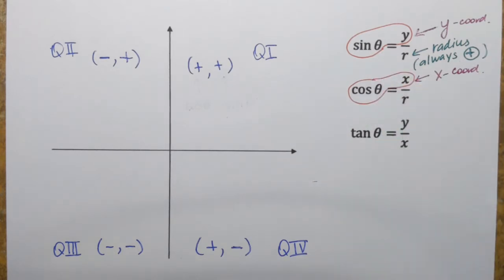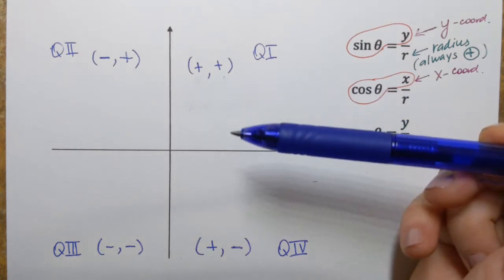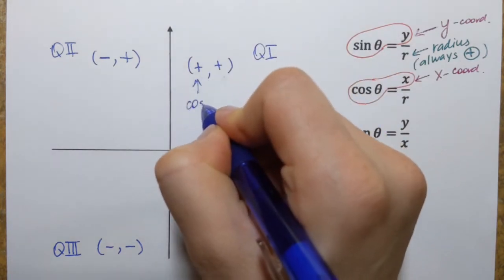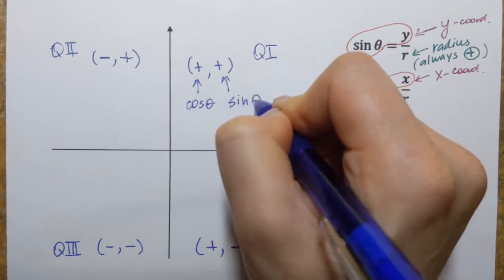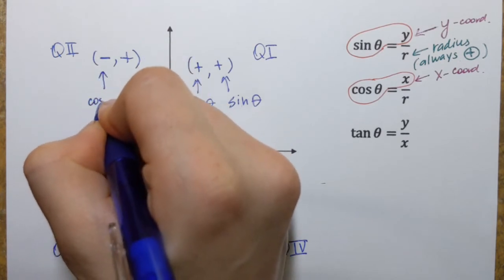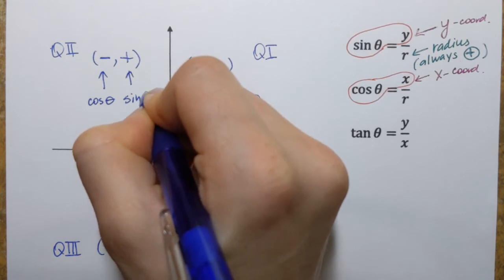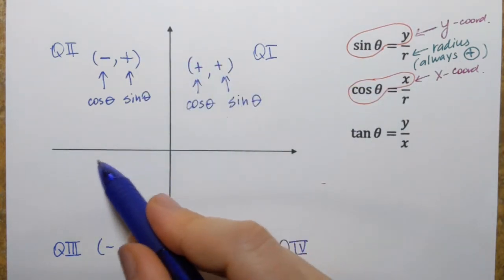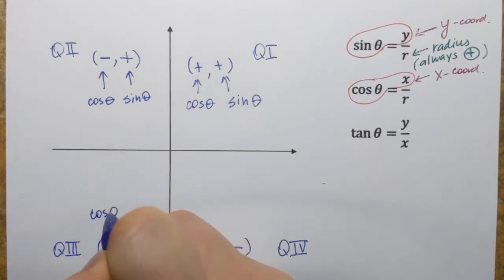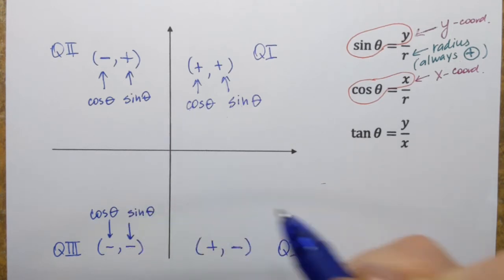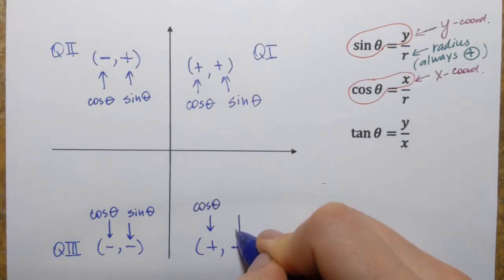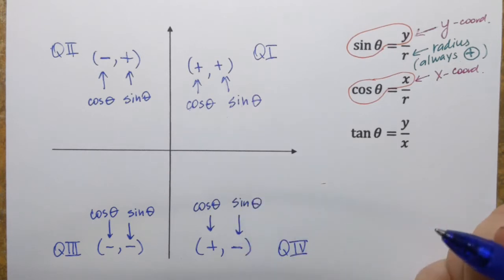So if an angle terminates in quadrant 1, both sine and cosine will be positive. For an angle in quadrant 2, cosine will be negative and sine will be positive. For any angle terminating in quadrant 3, both cosine and sine will be negative. And in quadrant 4, cosine is positive and sine is negative.